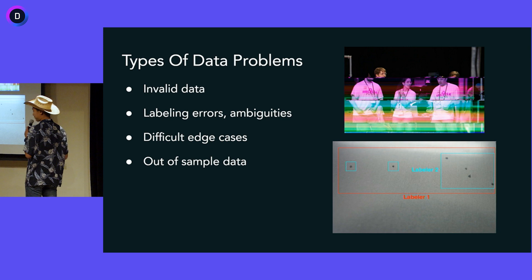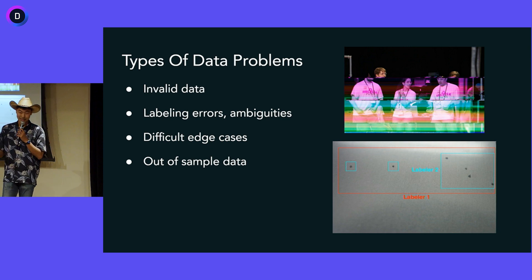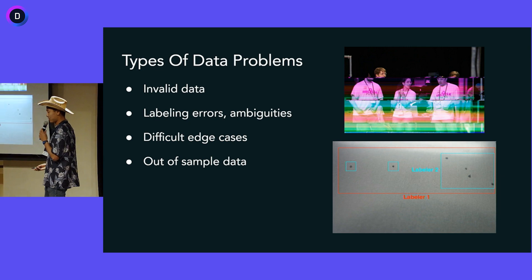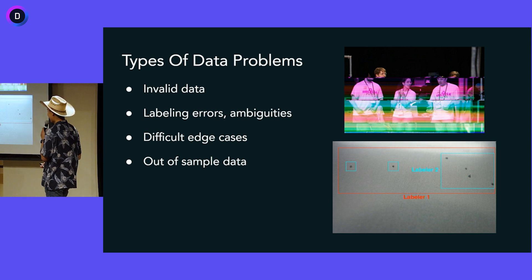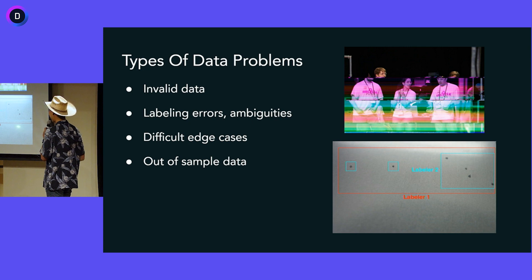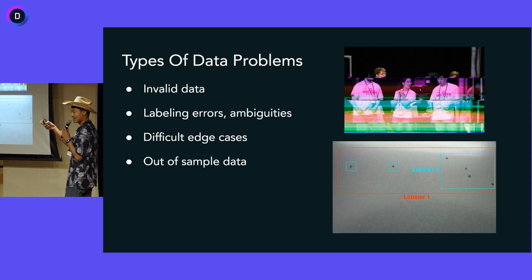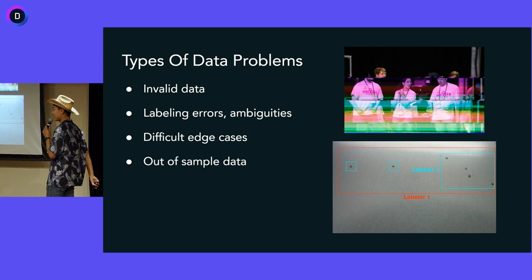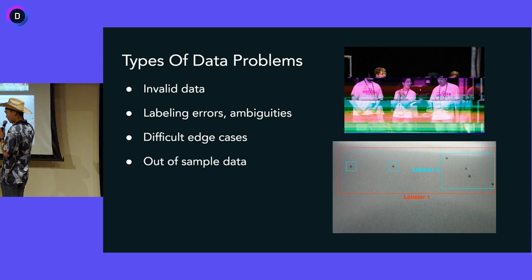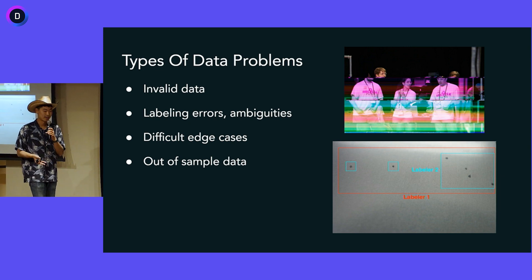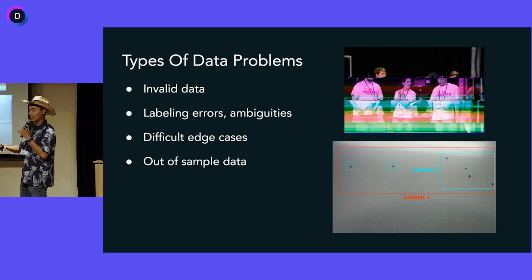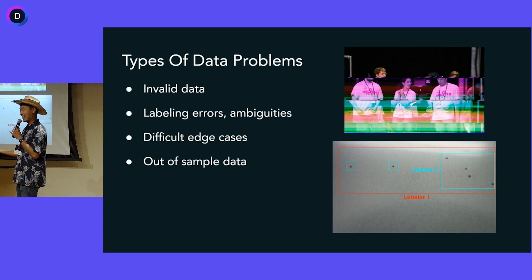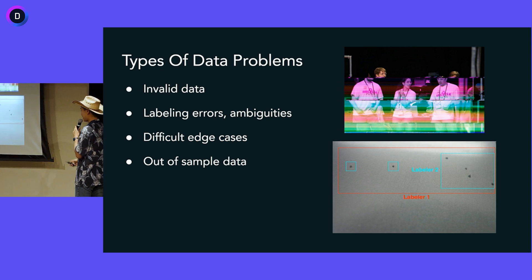On top of that you have the operational process of getting people to label data to tell the model what to do. Because people are labeling the data, they make mistakes — labeling errors, inconsistencies, and ambiguities. This is an example from Andrew Ng's talks where you have defects in a sheet of metal: one labeler draws a box around each individual dot, another draws a box around all of them. Both are technically correct, but the inconsistency confuses the model. And beyond that, you have higher-level problems like not having enough examples of a certain rare case, or something happening in production that isn't in your training set, so the model can't handle it.